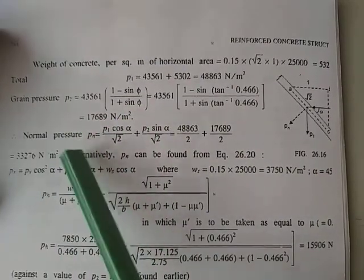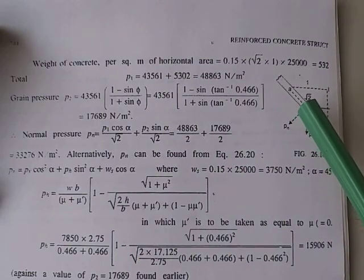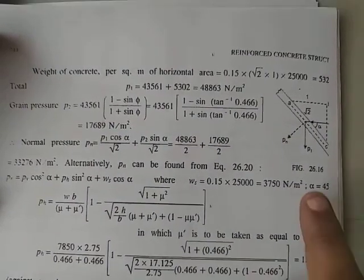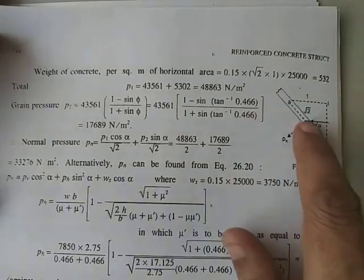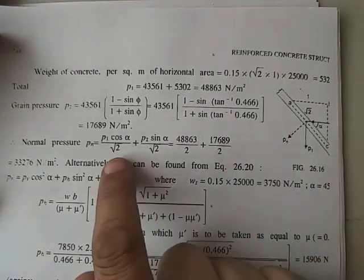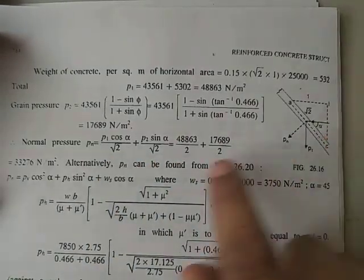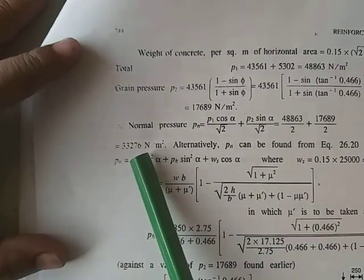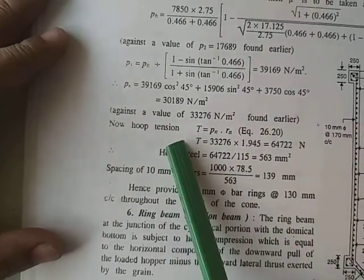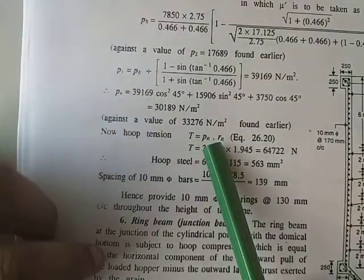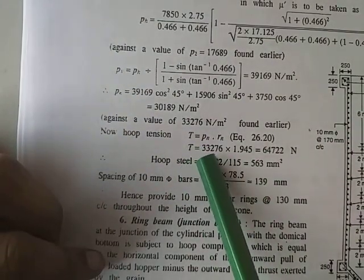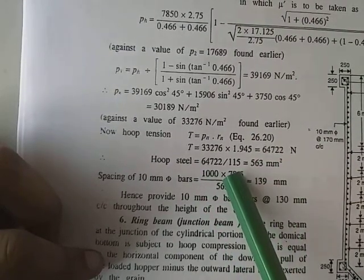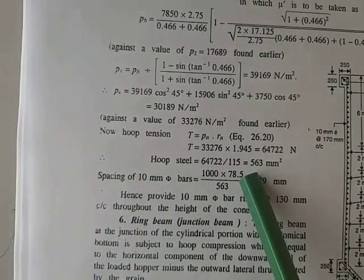Resolving p1 and p2 into the normal direction to the cone surface (taking 1 m × 1 m section with slant height √2): normal pressure pn = (p1 cos α + p2 sin α) / √2 × √2 = p1 cos α + p2 sin α = 337276 N/m². Hoop tension = pn × Rn = 337276 × 1.945 = 64722 N/m. Dividing by permissible stress gives area of steel = 563 mm².